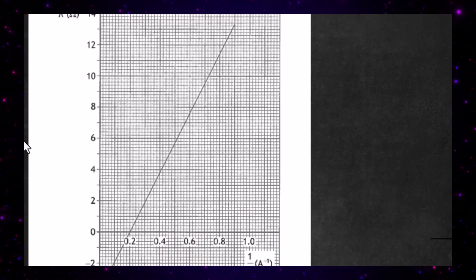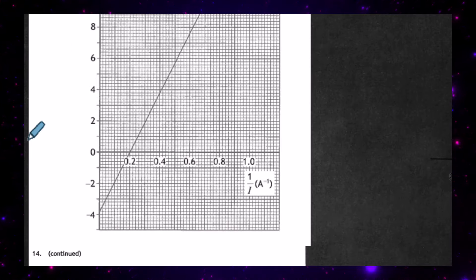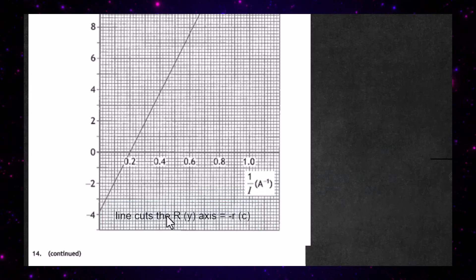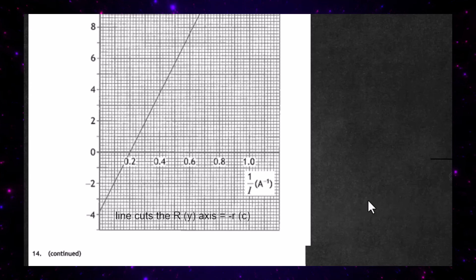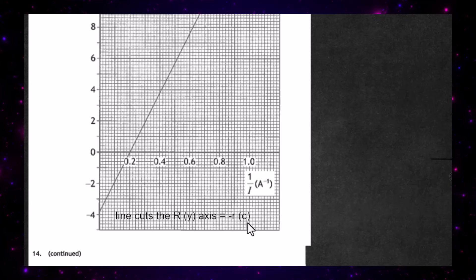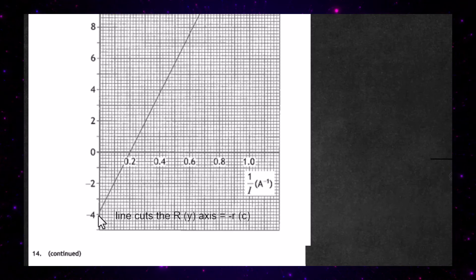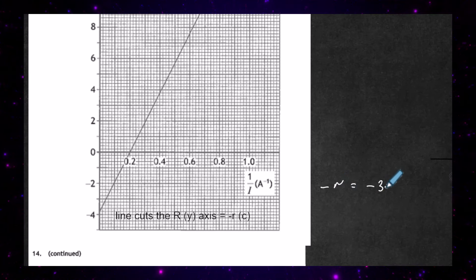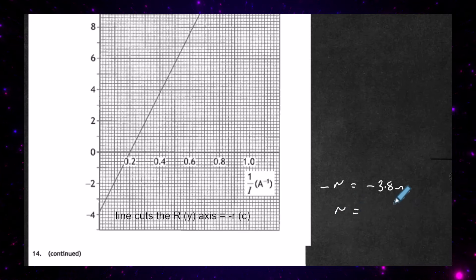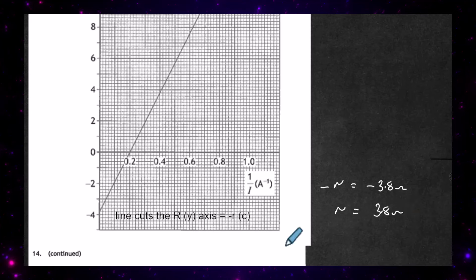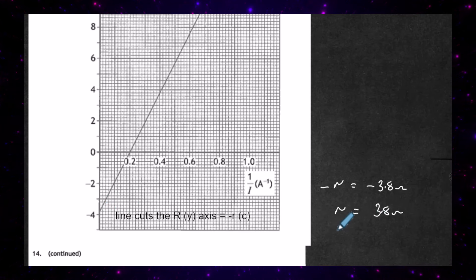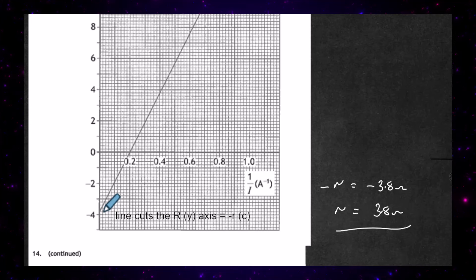We know the place where the line cuts the resistance axis is going to be minus the internal resistance — that point there. The line cuts the R-axis at position minus r, which is the constant c in y equals mx plus c. Looking closely at the graph, that value is minus 3.8. So minus r equals minus 3.8 ohms, and therefore the internal resistance of the battery is 3.8 ohms.